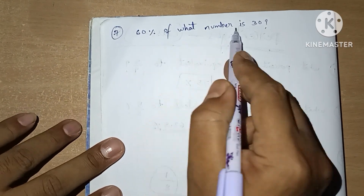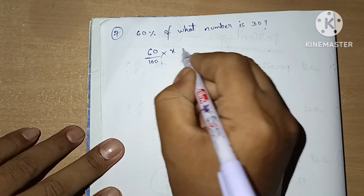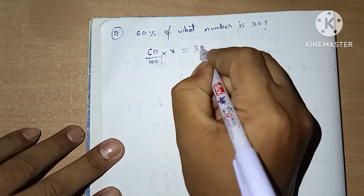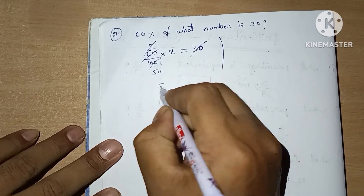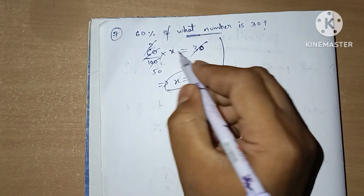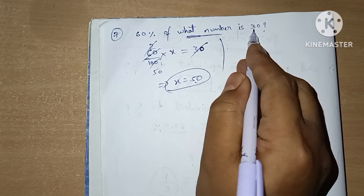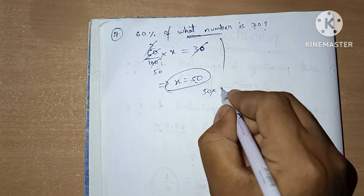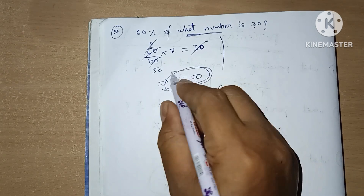Now question number 7: 60% of what number is 30? Using the terminology: 60 divided by 100 into x equals 30. Simplifying, x equals 50. So 50 is our answer. To verify: 60% of 50 — cancel two zeros, 5 times 6 is 30. That checks out.